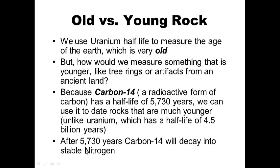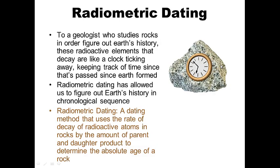Carbon-14 decays into stable nitrogen after 5,730 years. To a geologist, these radioactive elements that decay are like a clock ticking away, keeping track of time passed since Earth formed. It's an invaluable tool — it allows us to give an age to rocks, go back in time, and figure out major events in Earth's history, like when the dinosaurs died out and when humans first appeared.